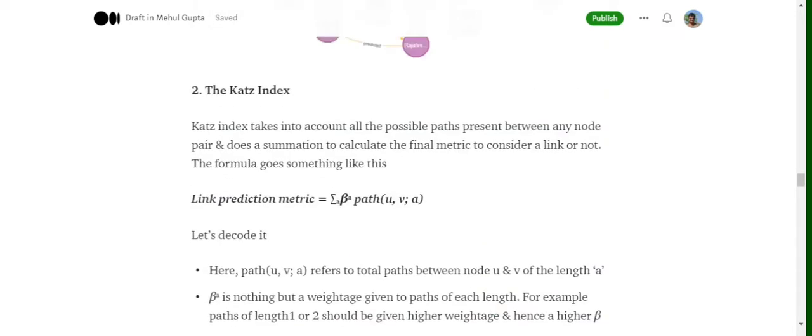Moving on to a second variant of the distance-based criteria for link prediction is the Katz index. Now the Katz index is a bit interesting and is an extension of the shortest path that we saw earlier. So the formula for the metric that we calculate for calculating Katz index between two nodes is a summation over beta into path_uv. What this tries to calculate is a complicated metric by considering all the possible paths between two nodes U and V and then apply weights to each path length.